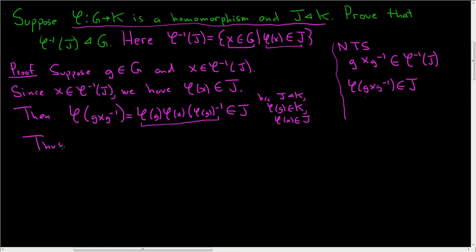Thus, gXg⁻¹ is in the inverse image of J. And so we've shown that the inverse image of J is a normal subgroup of G. So therefore, the inverse image of J is a normal subgroup of G.